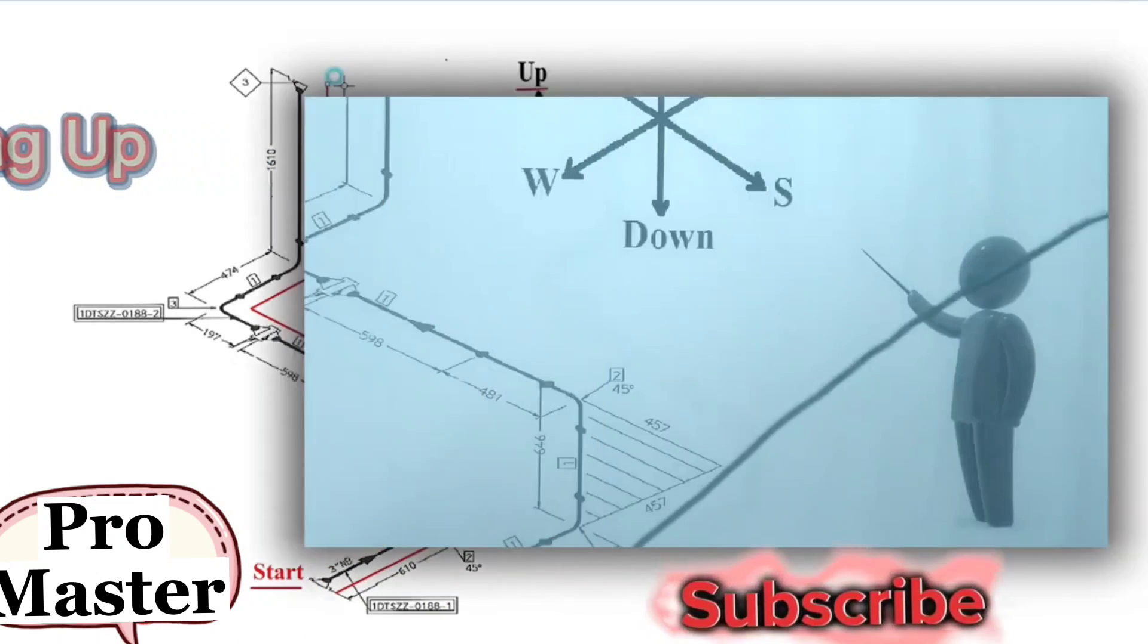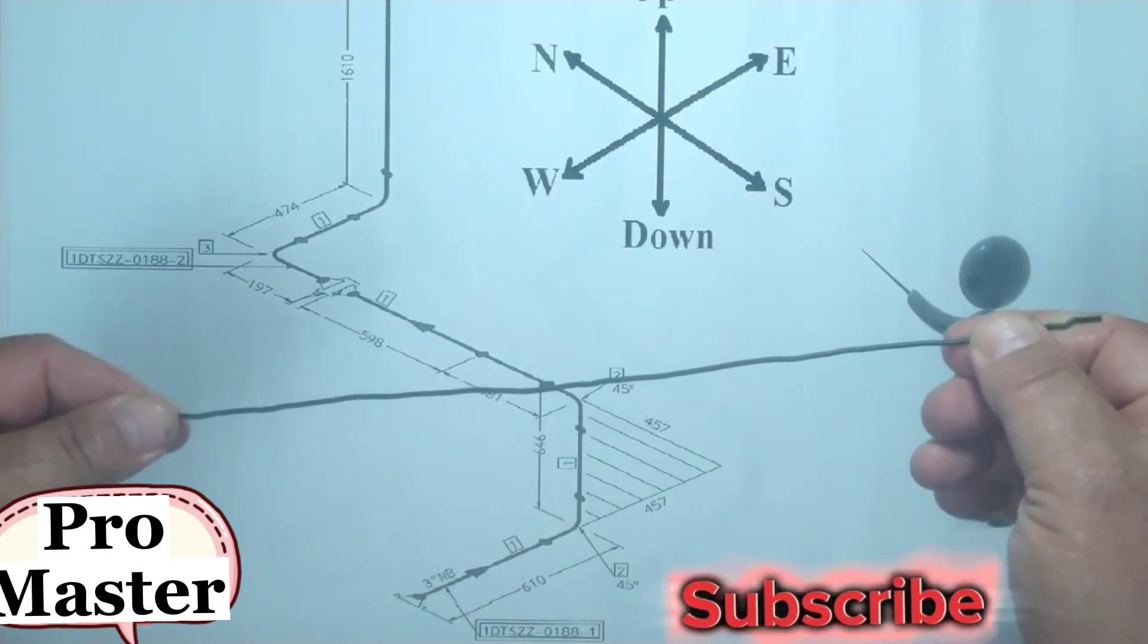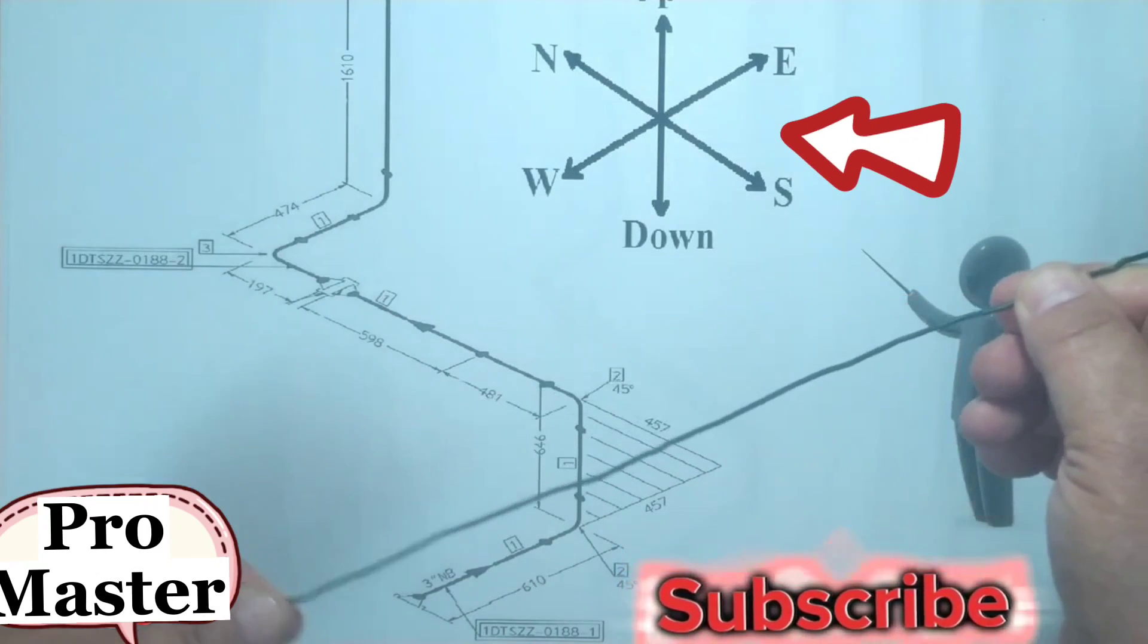Now let's bend the wire of this pipe drawing. This is our wire, the sketch showing these directions, this is the pipe isometric.